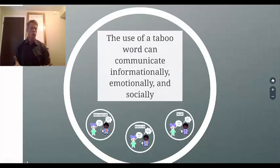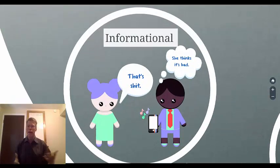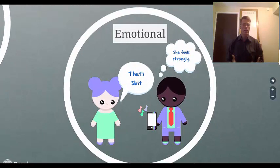The use of a taboo word, which is what we're focusing on, can communicate informationally, emotionally, and socially. For example, if this man is listening to music and the woman comes up to him and says, that's shit. Then informationally, what she's communicated to the man is she thinks it's bad. She doesn't like the music. But emotionally, with that same utterance, she's communicating something different, which is to say that she feels strongly about it, that she has strong emotions about that music, negative emotions.